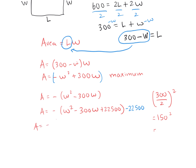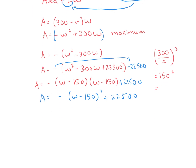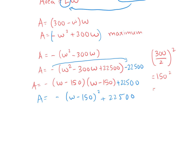Now we write it in vertex form: the quadratic factors to (W minus 150) squared. Don't forget to subtract 22,500 outside the bracket. Then we can write the full vertex form. If we set W minus 150 equal to zero, the width is 150.